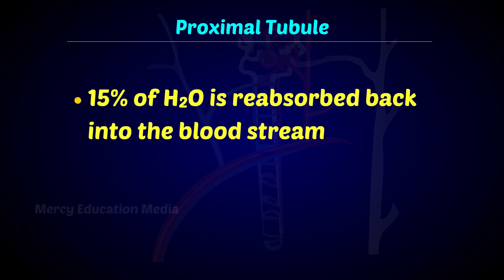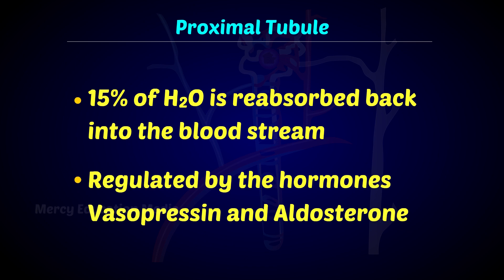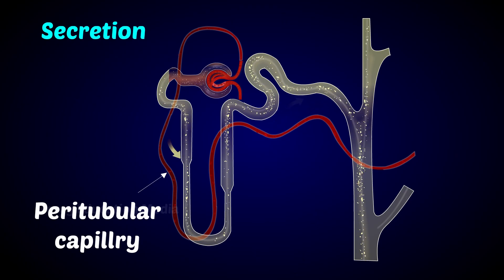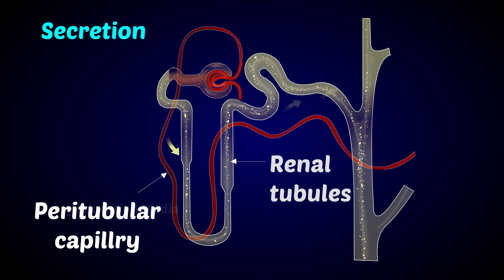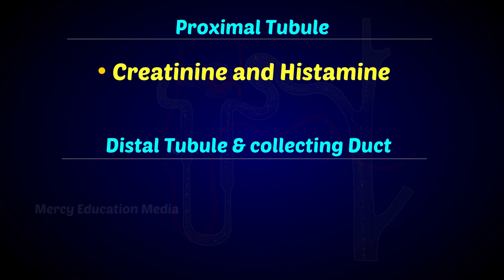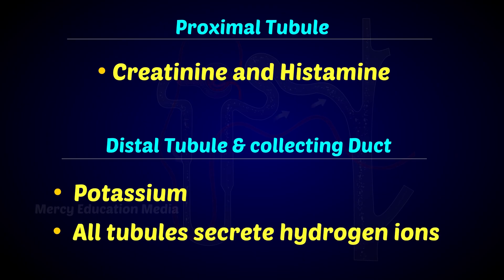The major part of reabsorption occurs in the proximal tubule, where about 15% of water is reabsorbed back into the bloodstream. This process is regulated by the hormones vasopressin and aldosterone. In tubular secretion, substances move from the plasma in the peritubular capillaries back into the filtrate. The proximal tubule secretes creatinine and histamine, while the distal tubule and collecting duct secrete potassium into the filtrate.